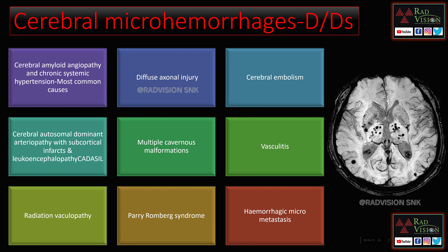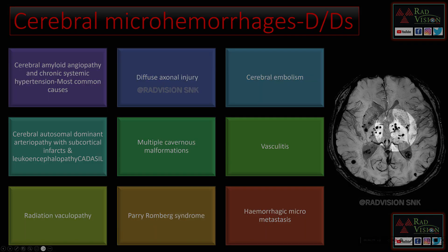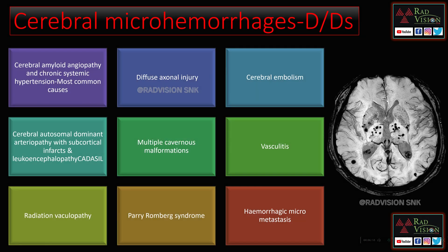Multiple cerebral microhemorrhages can be seen in DAI. Other common causes of cerebral microhemorrhages include cerebral amyloid angiopathy and chronic systemic hypertension. Additional causes are cerebral embolism, CADASIL (cerebral autosomal dominant arteriopathy with subcortical infarcts and leukoencephalopathy), multiple cavernous malformations, vasculitis, radiation vasculopathy, Parry-Romberg syndrome, and hemorrhagic micrometastases.